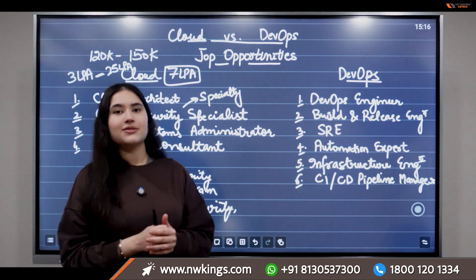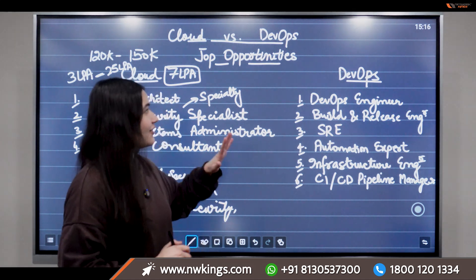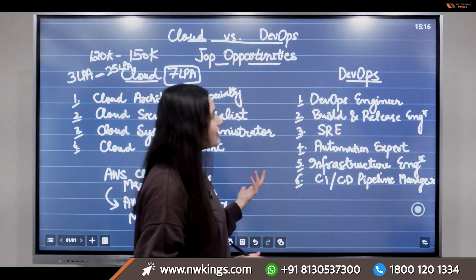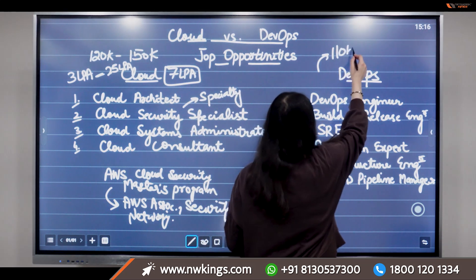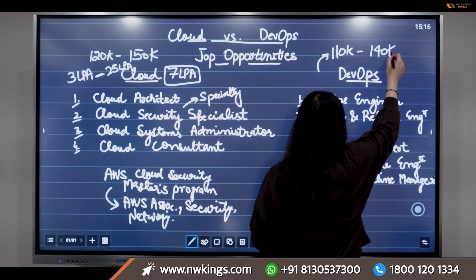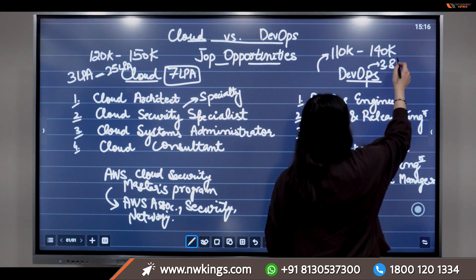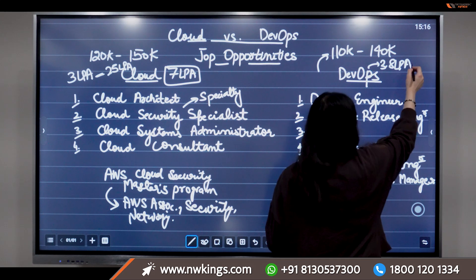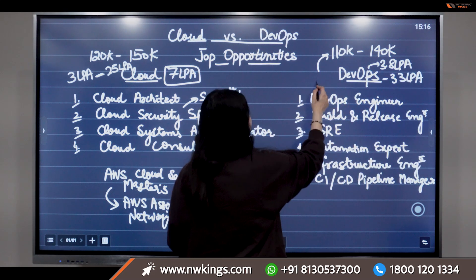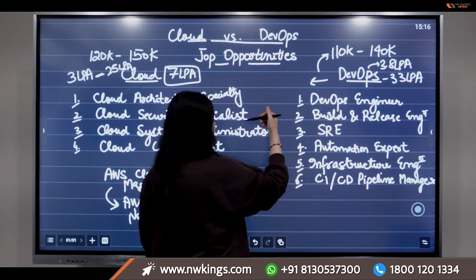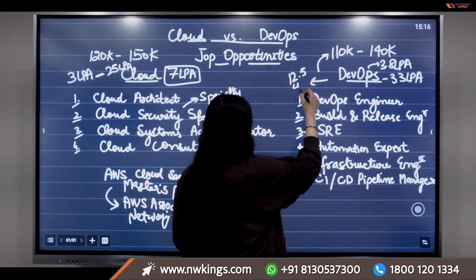You can check out the links to our Masters Program in the description box. Regarding DevOps engineer salaries, in the US it reaches around $110K to $140K annually. In India, it ranges from around 3.8 lakhs per annum up to 33 lakhs per annum, with an average of around 12.5 lakhs per annum for someone with one to two years of experience.